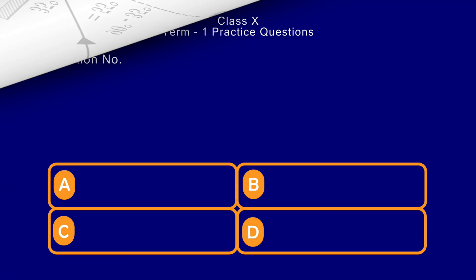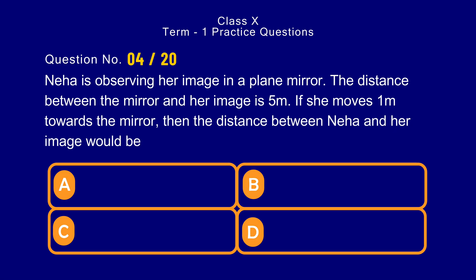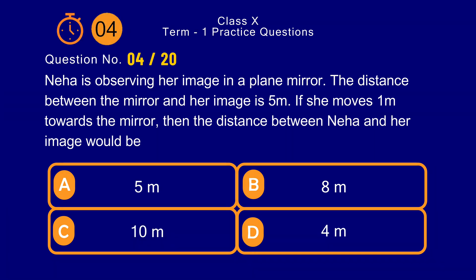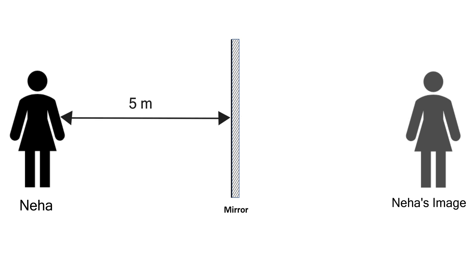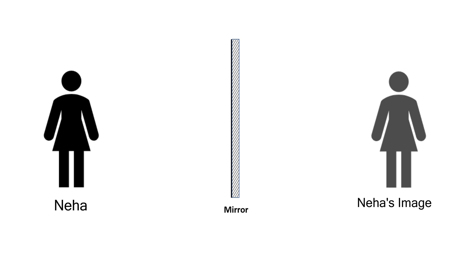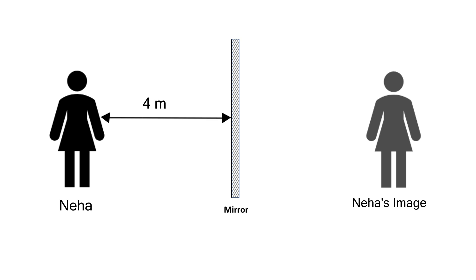Question number 4. Neha is observing her image in a plane mirror. The distance between the mirror and her image is 5 meter. If she moves 1 meter towards the mirror, the distance between Neha and her image would be — options: a) 5 meter, b) 8 meter, c) 10 meter, d) 4 meter. The correct answer is option b) 8 meter. For a plane mirror, the distance between image and mirror is the same as the distance between object and mirror. Initially Neha is 5 meters from the mirror. She moves 1 meter closer, so the distance is now 4 meter. The image will also be 4 meter behind the mirror, giving a total distance of 8 meter.